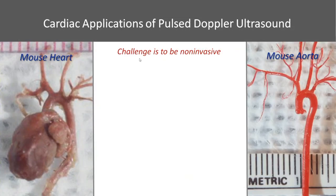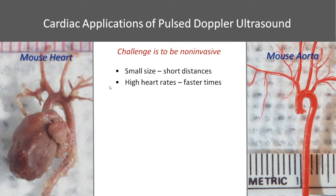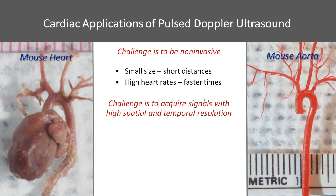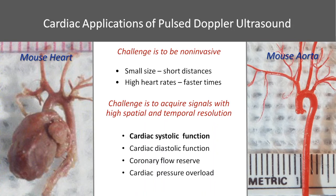The challenge is to be non-invasive. But the next challenge is that mice and similar sized animals are small, the distances are short, and they have high heart rates — meaning the times are very fast. So the next set of challenges is to acquire signals with high spatial and temporal resolution, so that we do not lose out the information that these animals provide. With that in mind, I will start moving on to the applications.